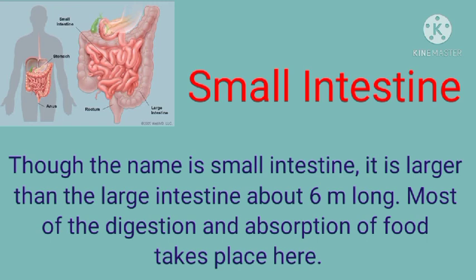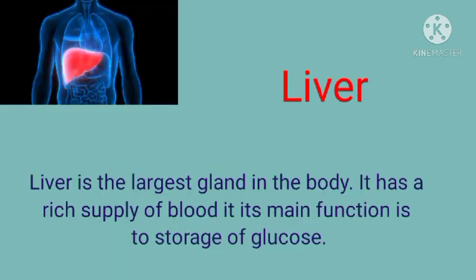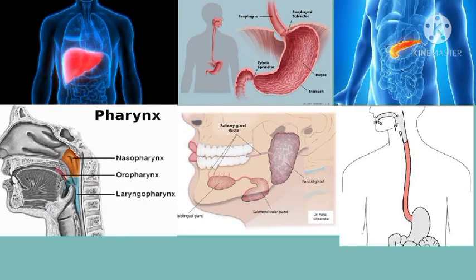Though it is called the small intestine, it is larger than the large intestine, with a length of 6 meters. Most of the digestion and absorption of food into the blood takes place in the small intestine. The liver is the largest gland of the body, with a rich supply of blood. The main function of the liver is to store glucose from the food. These are all the organs in our digestive system that carry out the process of digestion.